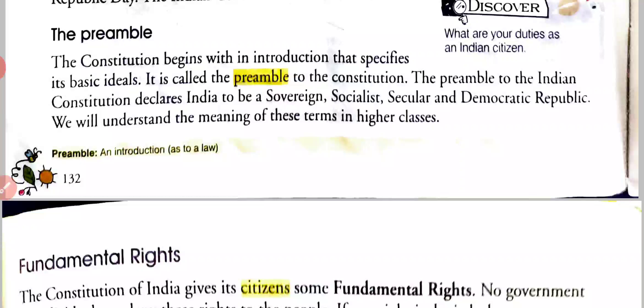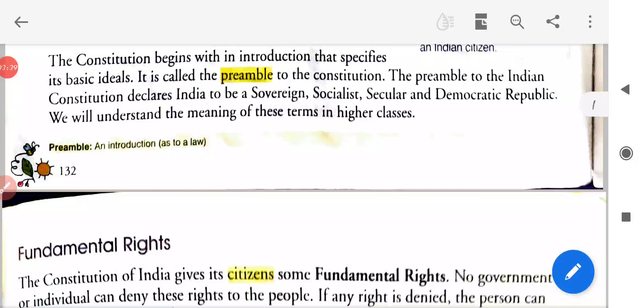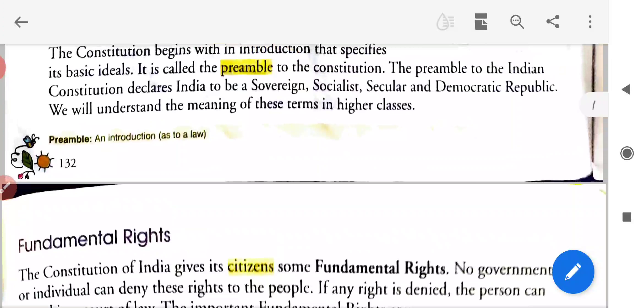The preamble to the Indian constitution declares India to be a sovereign, socialist, secular and democratic republic. Bharti sanvidhan ki prastavna, Bharat ko ek sarvaprabhu, samajwadi, dharmnirpeksh aur loktantri gantantra ghoshit karti hai. We will understand the meaning of these terms in higher classes.